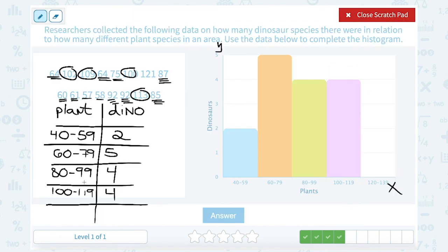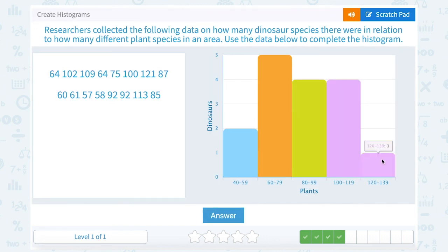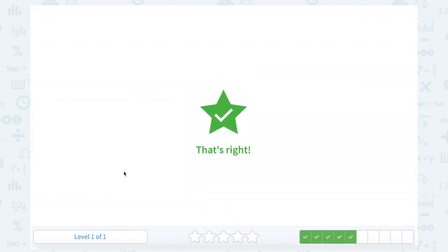And then the last column was 120 to 139. And I can see in this whole list of numbers there's only one number that falls in that range, 121. So I'm only going to go up to 1 for that last bar. That's right. Okay. Thank you.